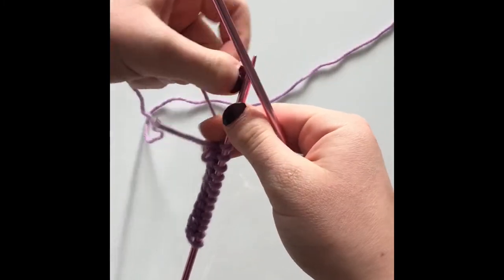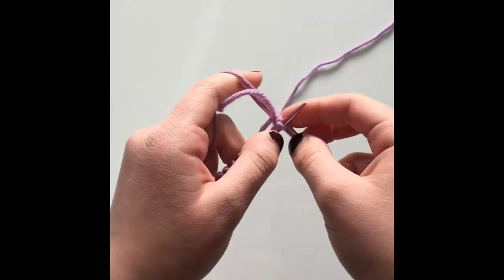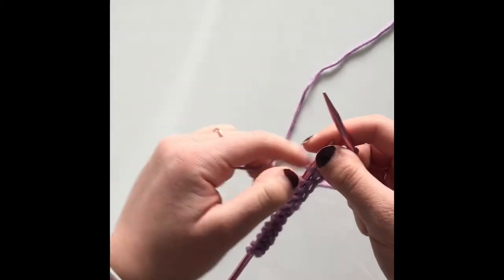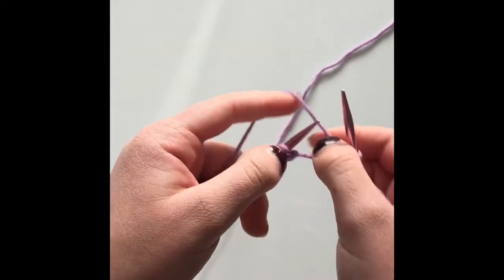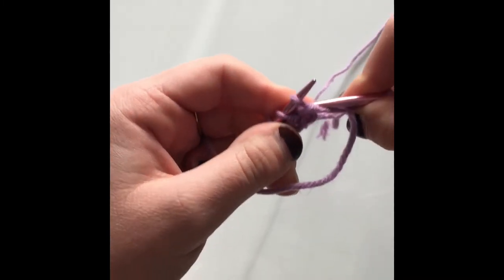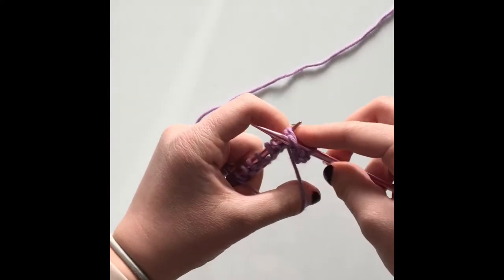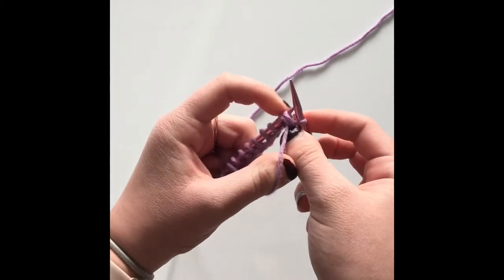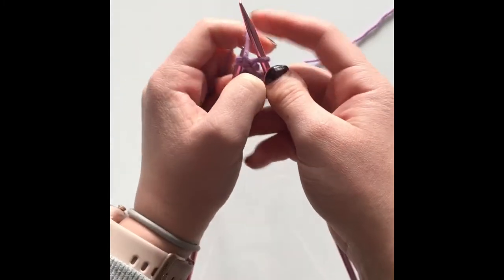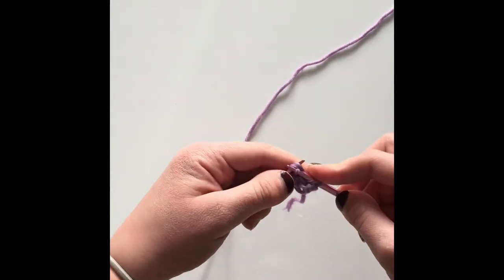For row two, this is where we get into the pattern more. So we're going to start by just regular knitting the first stitch. Watch out for the tail, don't want it to get in the way or knit that in by accident. Okay, so we are going to be putting our yarn in front like this. We're going to be purling the first two stitches together. So place your needle into two stitches here, like that. We're going to yarn over. And before you take off those two stitches, these ones, usually you would slip these off, but what we're going to do is take our yarn to the back through these two needles here to the back.